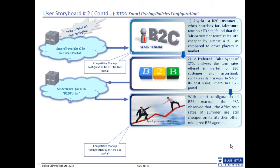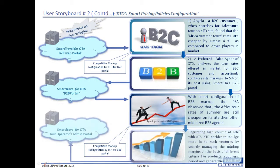Thanks to the competitive markup configuration by XTO for the B2C portal, various customers like Angela find that Africa summer tours offered by ATS on the XTO site are almost 4% cheaper than other players. The preferred sales agents of XTO mark up by 5% using SmartTravel's B2B portal and still find it to be cheaper than most other mid-size B2B agents. Thanks to the pricing configurations offered by SmartTravel, XTO manages to make high-volume sales with ATS and enables them to manage markup margins based on different criteria like product, supplier, periods and geography.